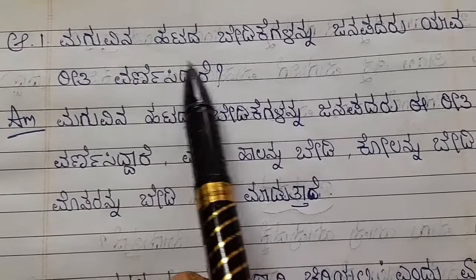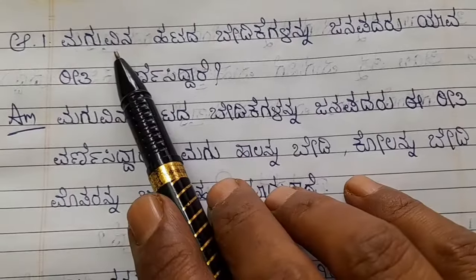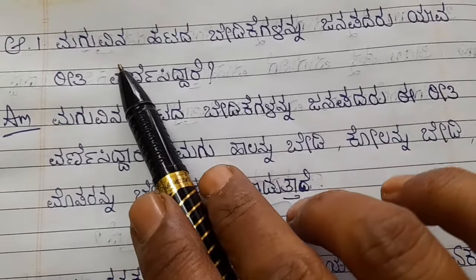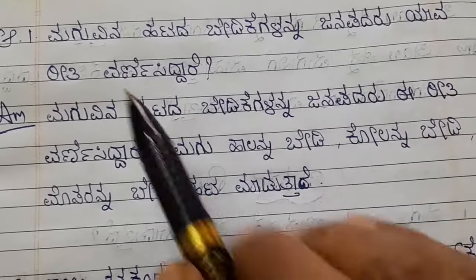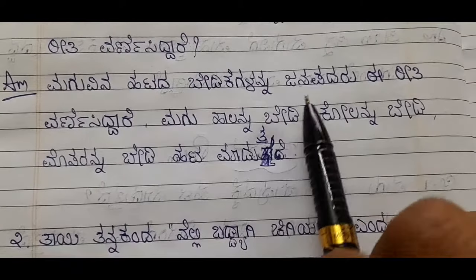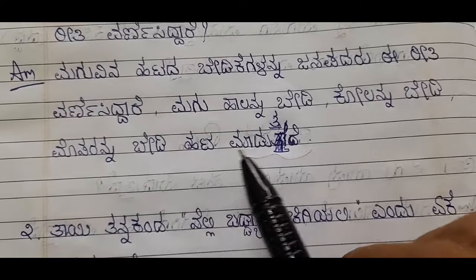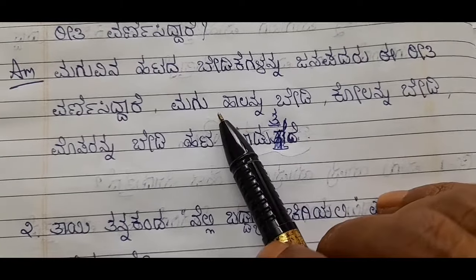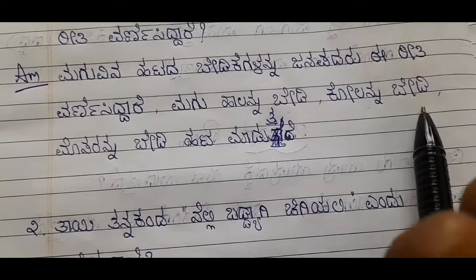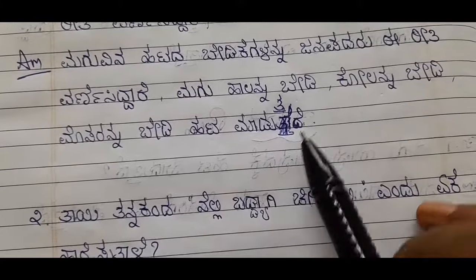First question: Magu ina hattada bedike galannum janapadaru yavariti varnisiddhaare — how have the folk singers described the child's stubborn demands? Magu means child, hattada means stubbornly, bedike means demands, varnisiddhaare means described. Answer: Magu hálannu bedi, koolannu bedi, mosarannu bedi hattada madutthadhe. The child stubbornly asks for milk, for the stick, and for curd.